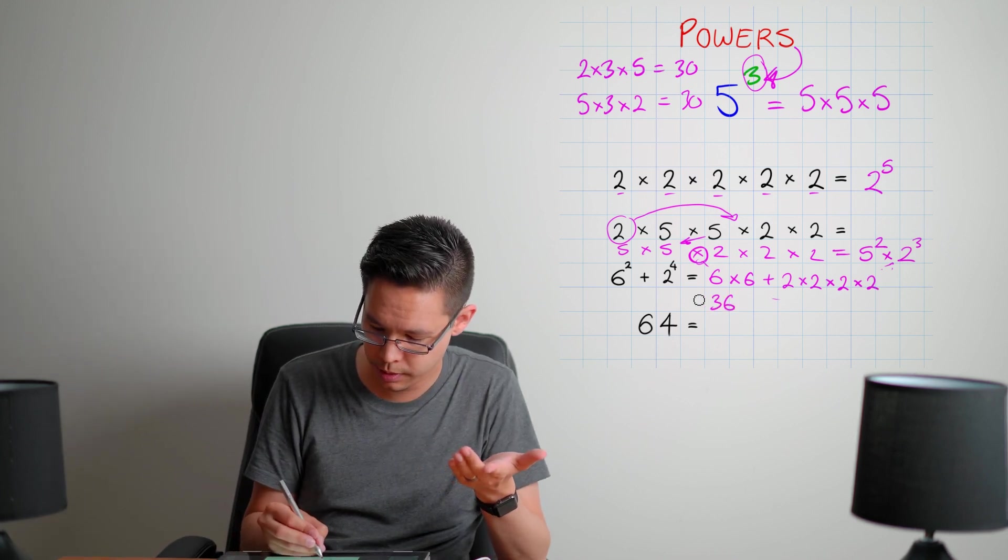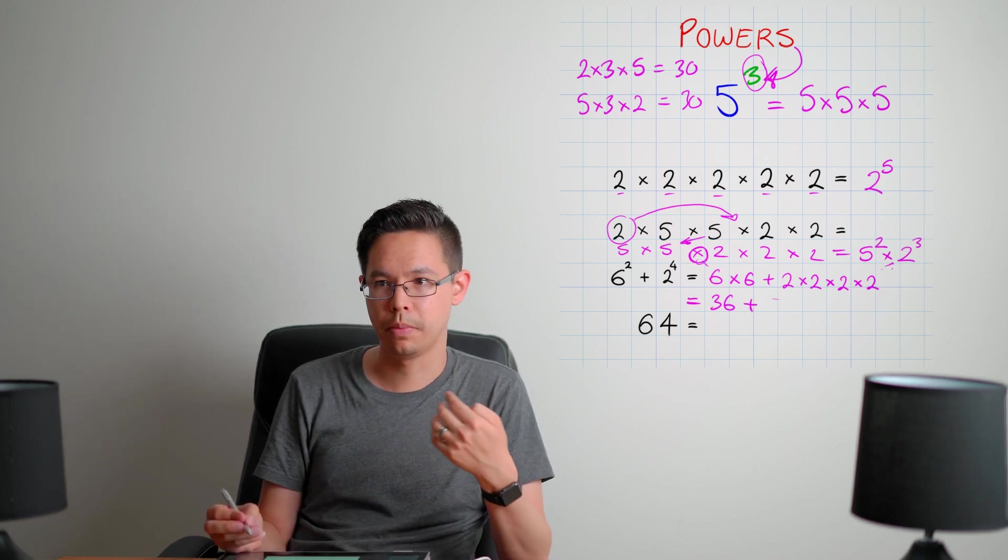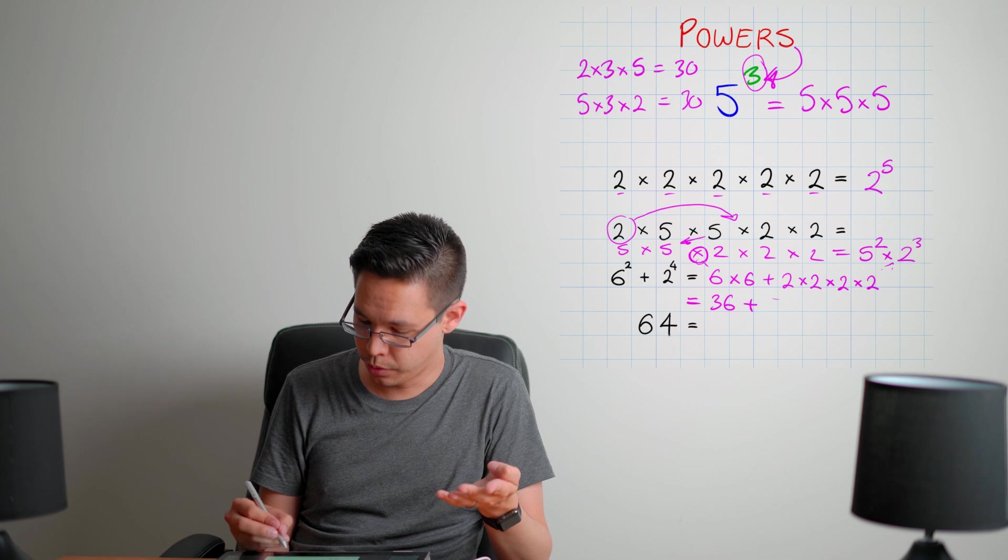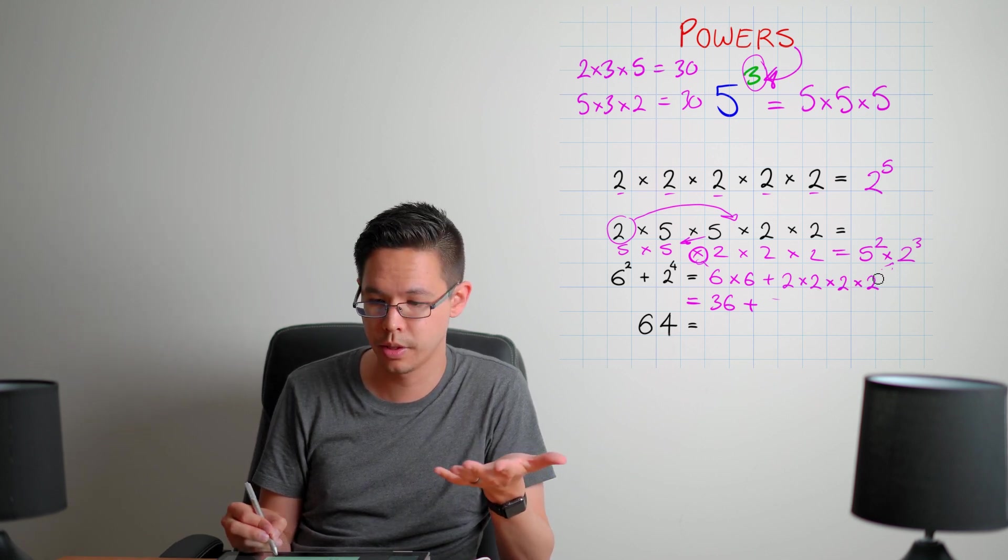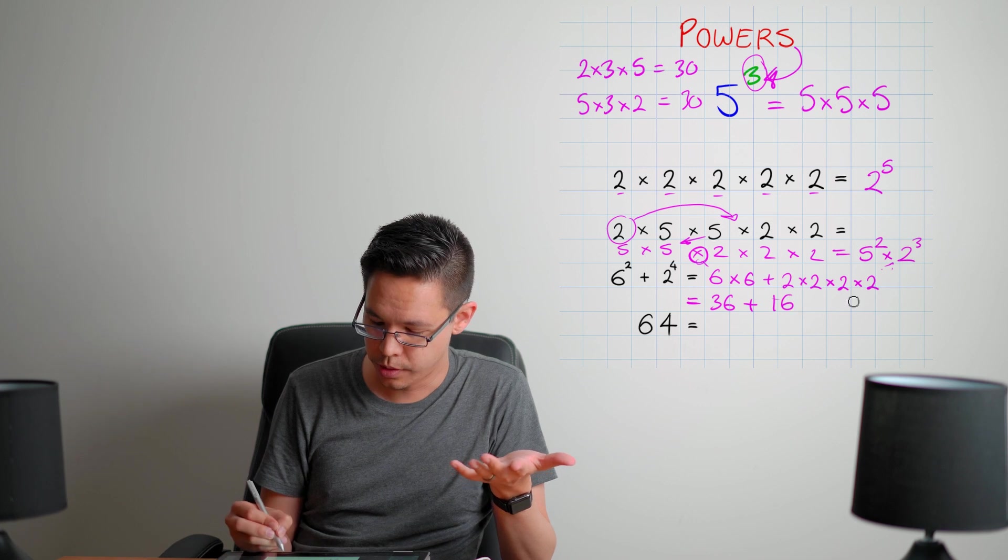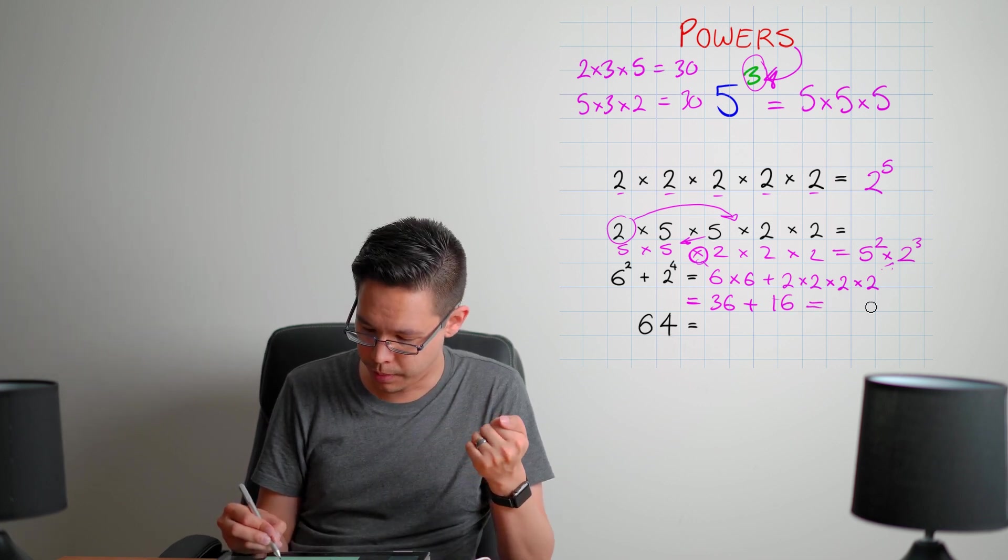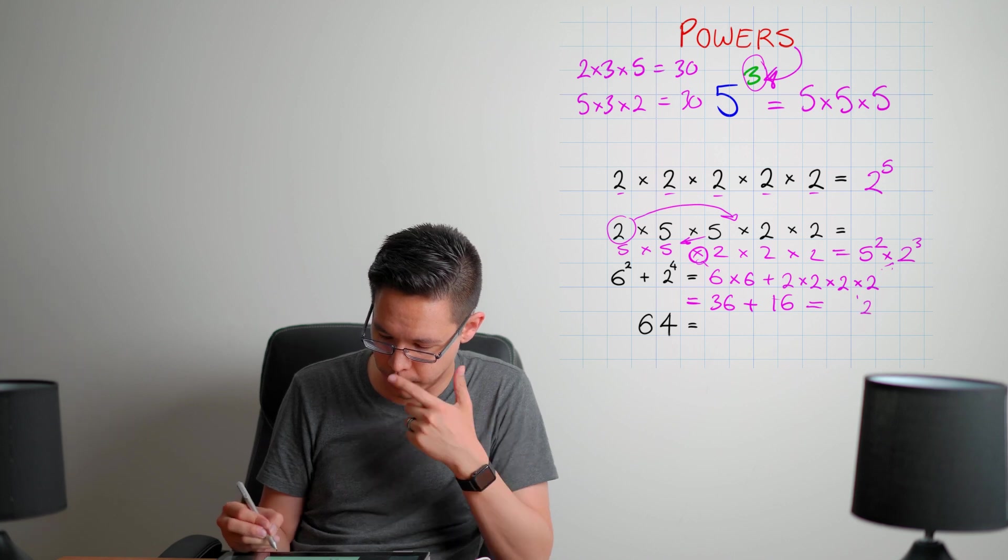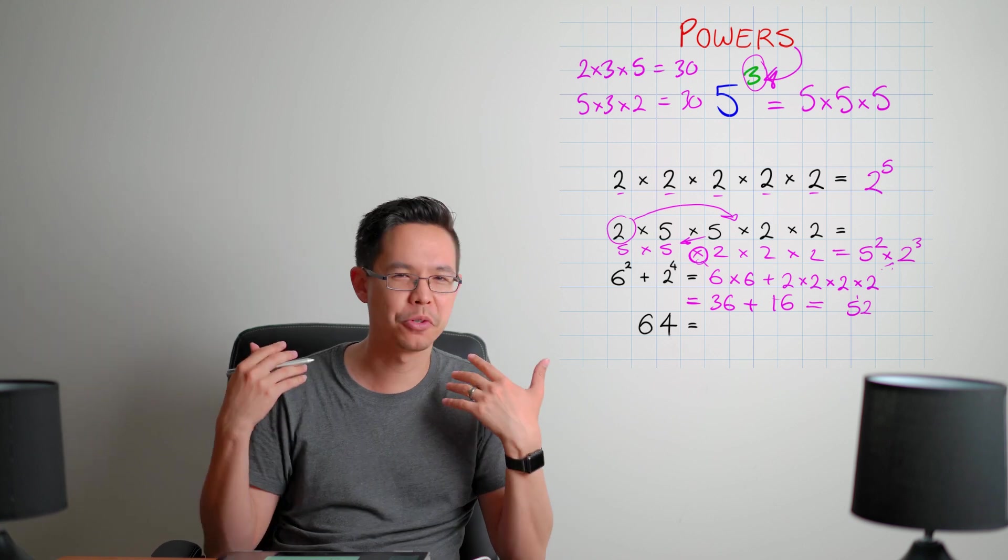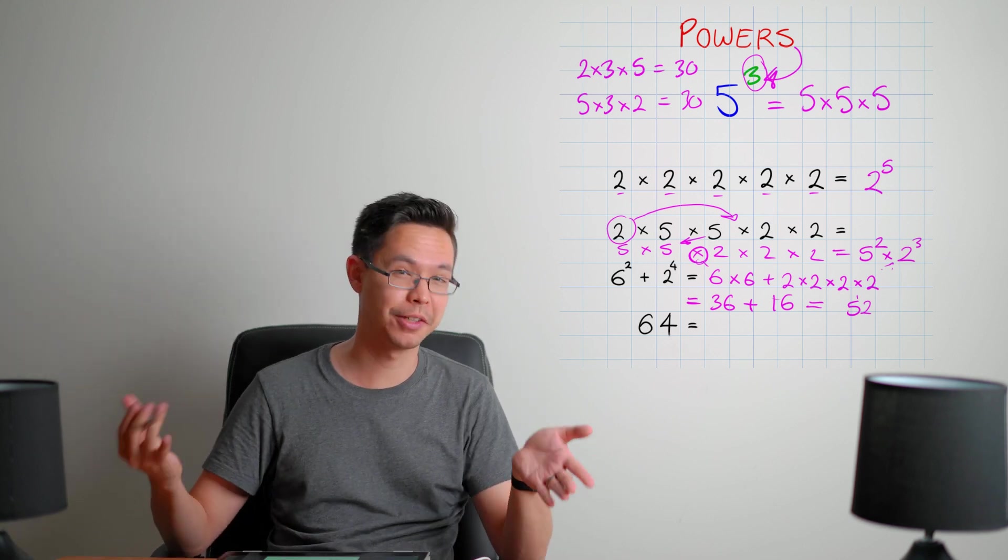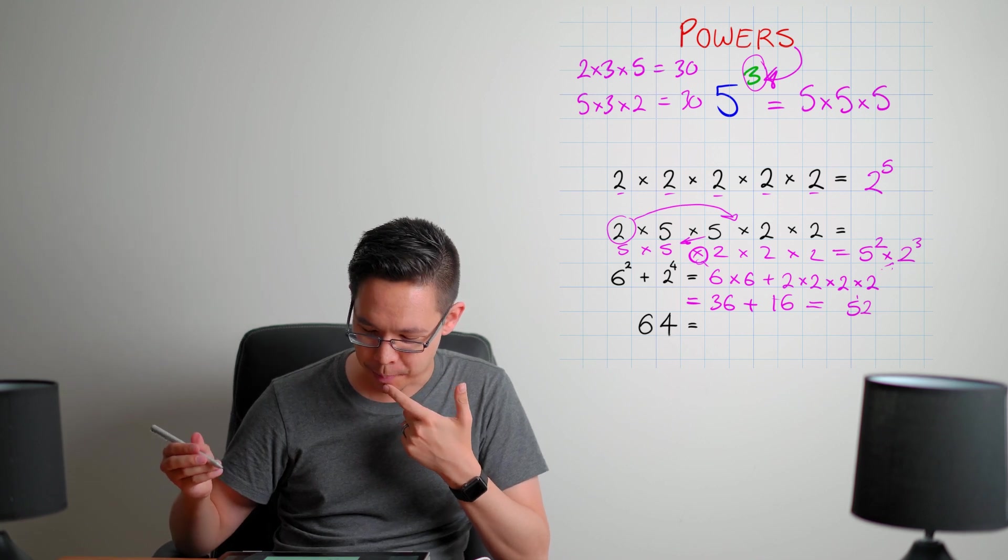So six times six is 36. Plus two times two, that gives me four. Four times two gives me eight. Eight times two gives me 16. So 36 plus 16. If I can do some maths properly, I'll get a two there, carry the one. Three and one makes four. That's 52, I think. I'm sure if somebody in the comment feed can correct me if I've got that wrong, because in my more recent videos, I made a mistake.